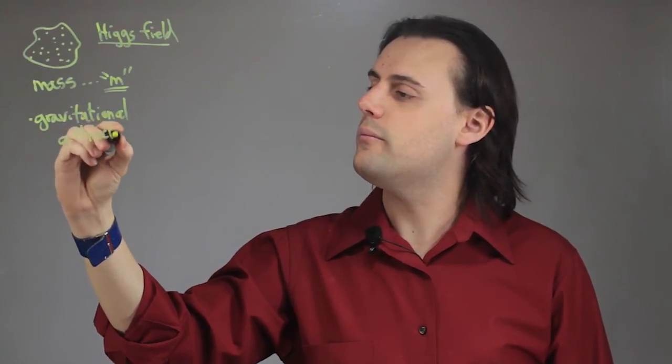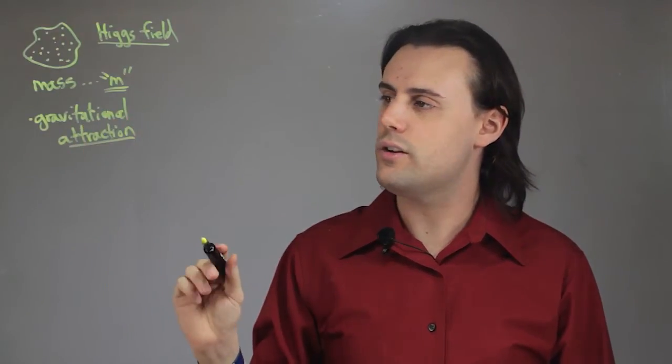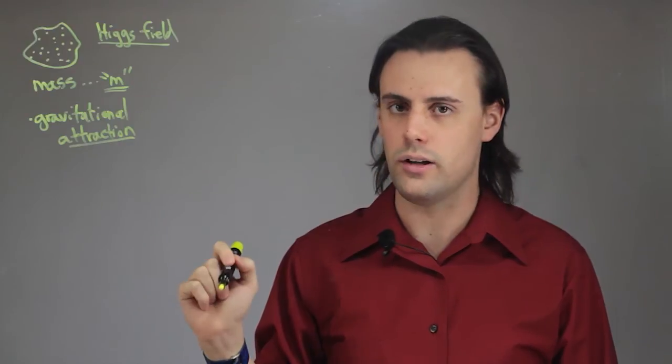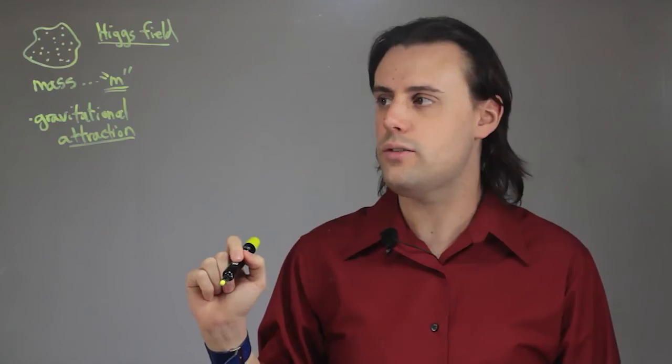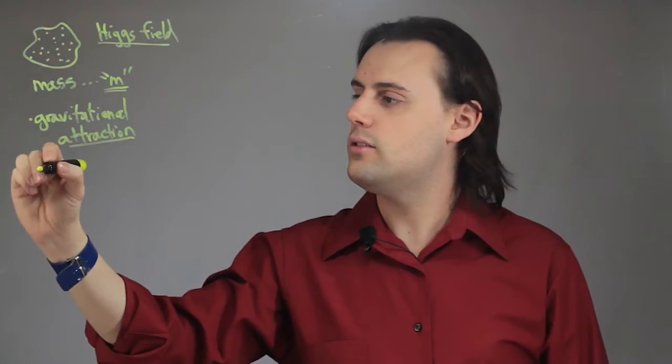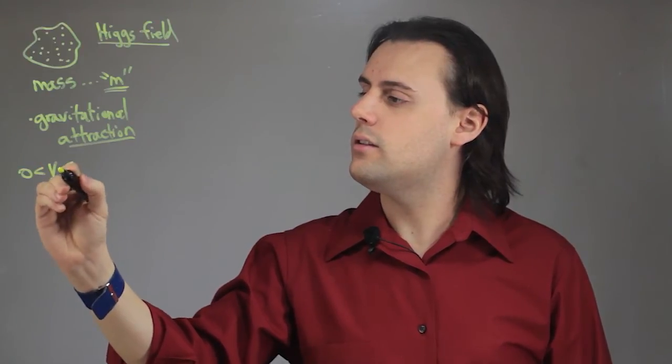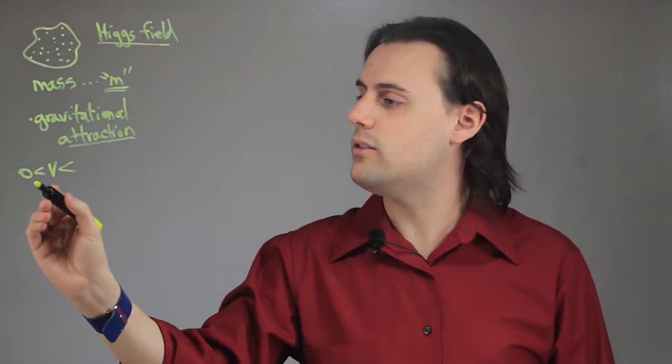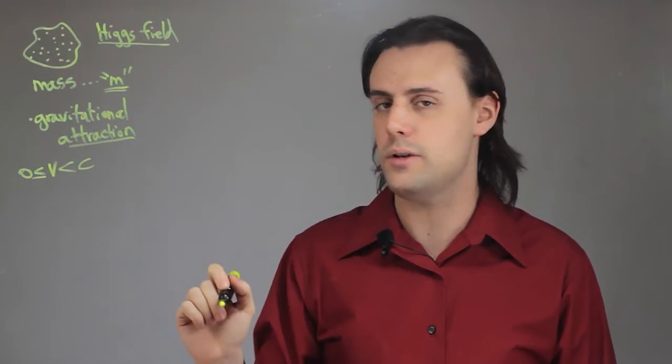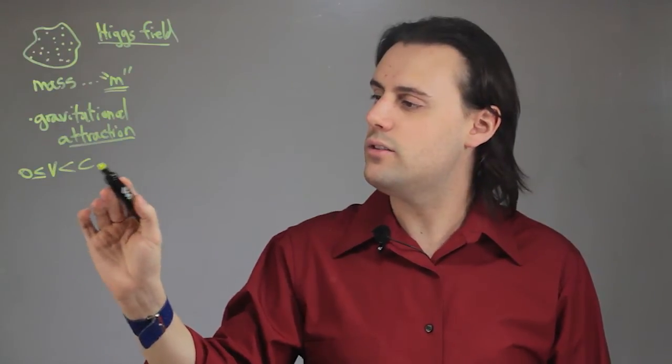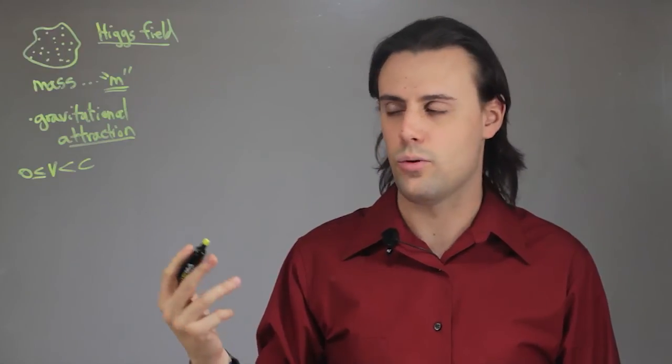And in addition to that, because they have mass, they are very different from other types of particles, such as photons and light, meaning they cannot travel at or faster than the speed of light. So the velocity or speed can be greater than zero or equal to zero, but it cannot be equal to or greater than the speed of light, C. So this is a fundamental limit associated with all particles that have mass or matter in the universe.